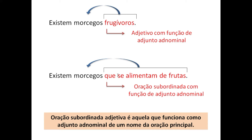E eu não consigo trocar esse 'que' por 'isso'. Lá nas orações substantivas eu vi a utilização do 'isso'. Agora aqui ele está retomando a palavra 'morcegos'. Então a minha segunda oração vai ser uma oração subordinada com função de adjunto adnominal. Eu tenho uma oração subordinada adjetiva, que é aquela que funciona como adjunto adnominal de um nome da oração principal. Eu tenho que localizar os dois verbos e o nexo que está unindo — esse nexo não é uma conjunção, é um pronome relativo, retomando algo da oração principal.